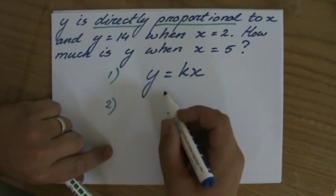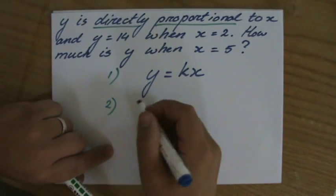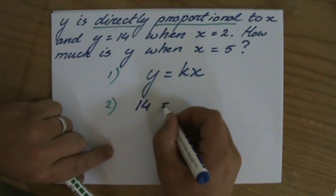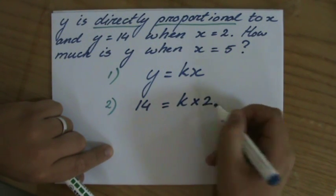They say y is 14 when x is 2. Let's use that general formula to make sense of what they're saying. Y is 14 when x is 2, so 14 equals k times 2.